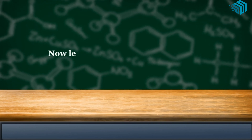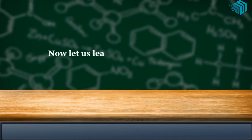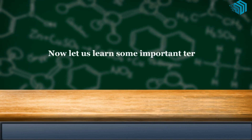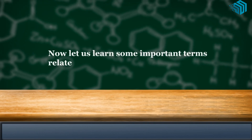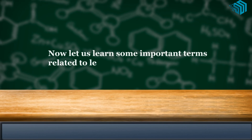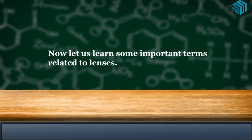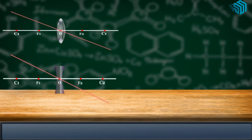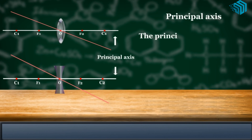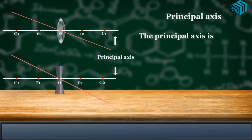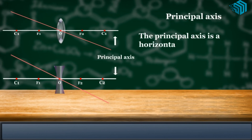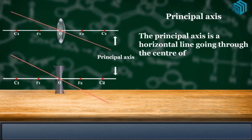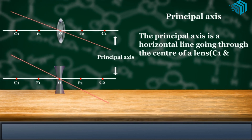Let us learn some important terms related to lenses. The principal axis is a horizontal line going through the center of a lens, which is C1 and C2.